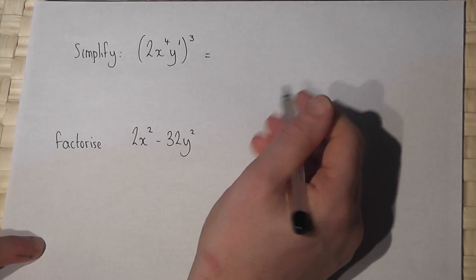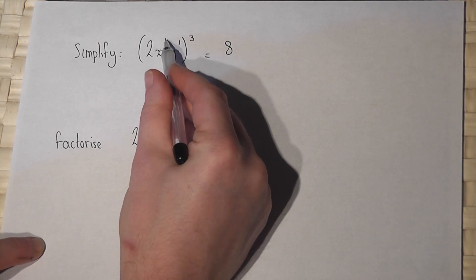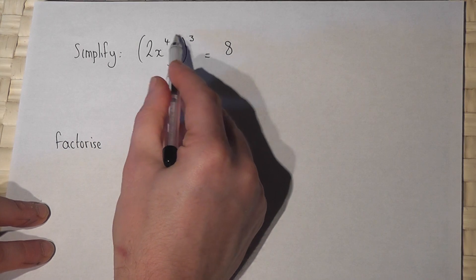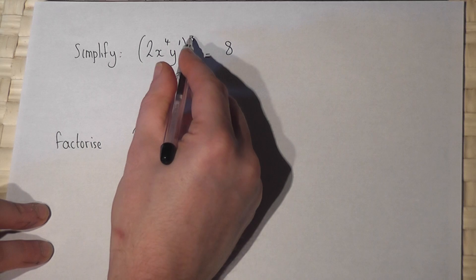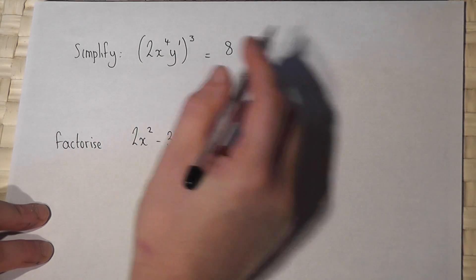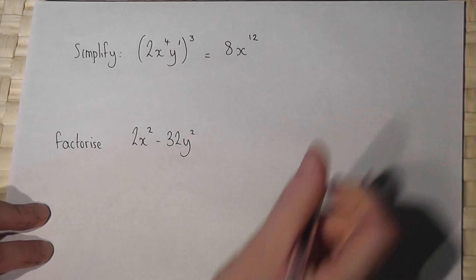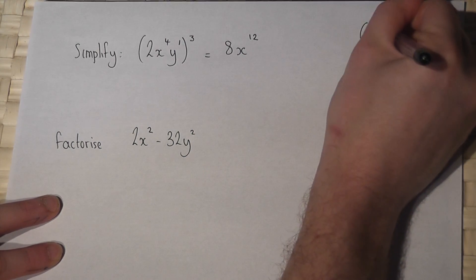Now then x to the power of 4 cubed, we just times together the two powers so x to the power of 4 all cubed is 4 times 3 is 12, x to the power of 12. That's one of the key indice rules: x^n to the power of m is x to the power of n times by m.